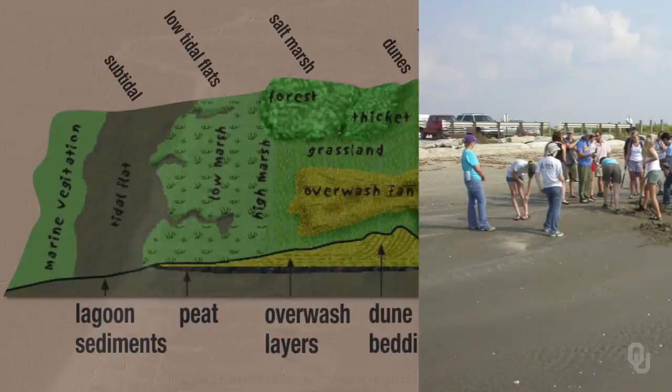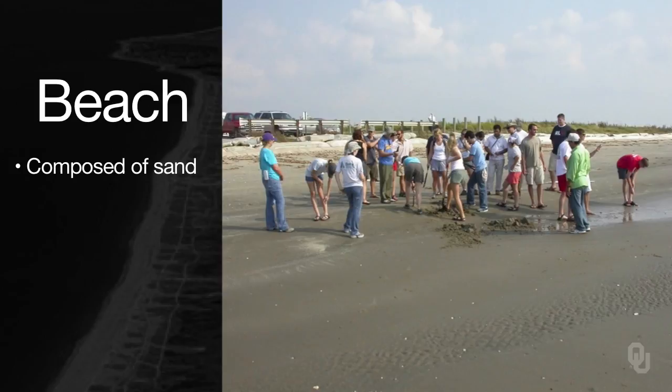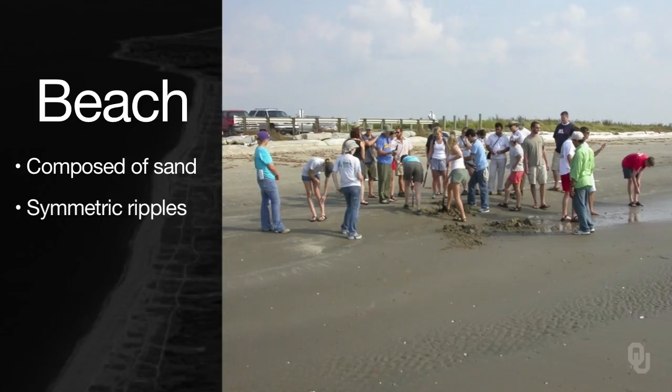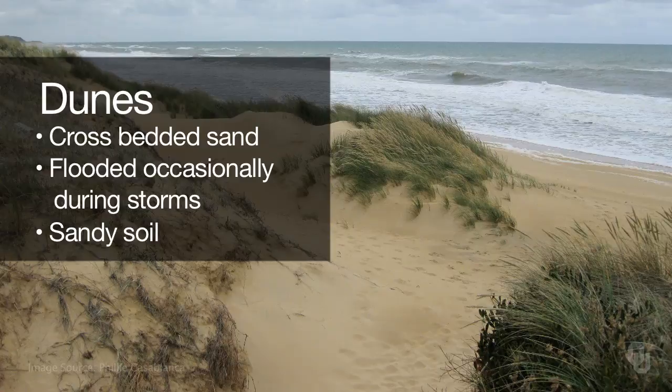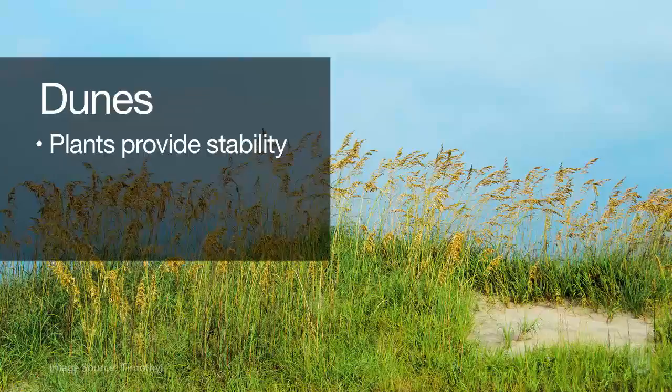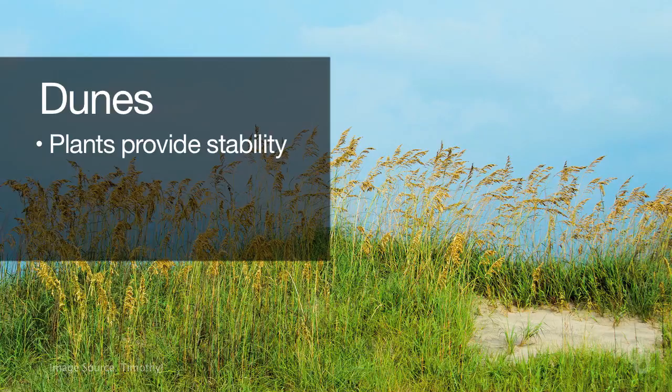Here's a picture of a beach in Louisiana. It's composed of sand. There are symmetrical ripples and a group of students digging a trench on the beach. The dunes are generally crossbedded sand, only flooded occasionally during large storms, sometimes with a sandy soil. There are plants that occur in the dunes, and they're actually very important because they stabilize the dunes. You shouldn't be walking on those plants because it will destabilize them and destroy the dunes.